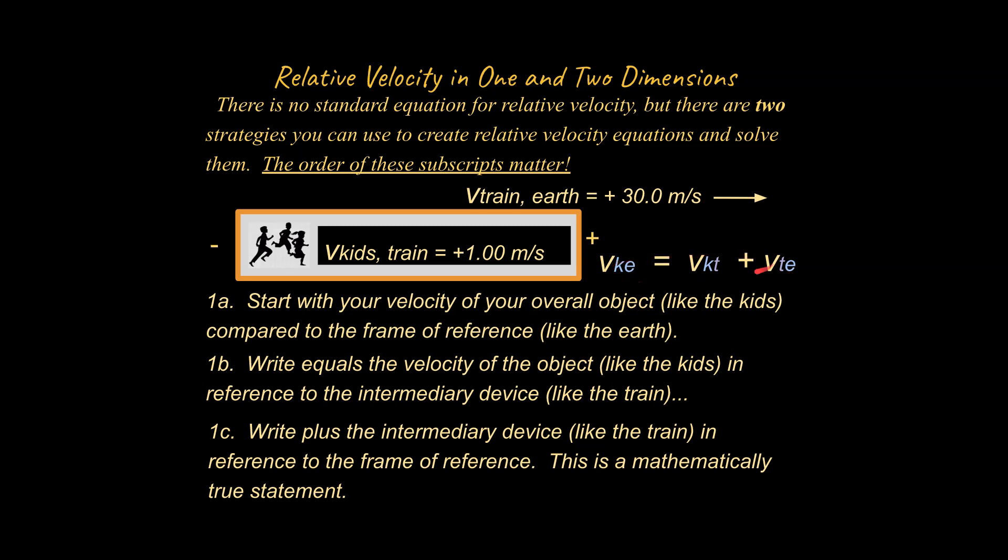And then we add the velocity of the intermediary device, like the train, in reference to our overall frame of reference. So the velocity of the train with respect to the Earth. And then this is a mathematically true statement. In other words, the velocity of the kids with respect to the Earth equals the velocity of the kids with respect to the train plus the velocity of the train with respect to the Earth.